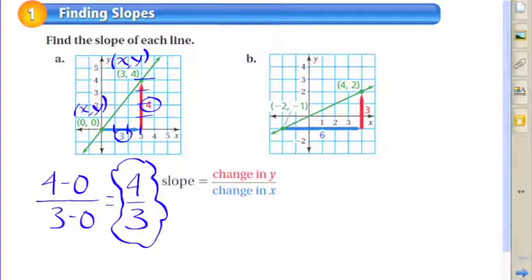And of course a negative divided by a negative is a positive, so either way you should get positive 4/3. So let's move on to the other example here.